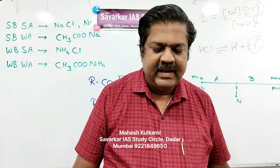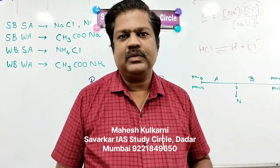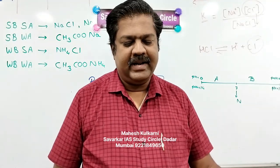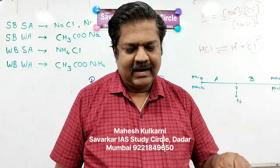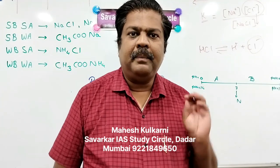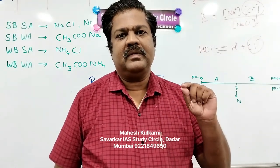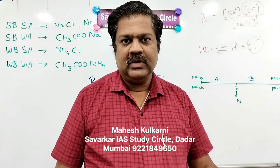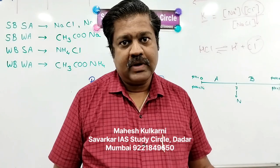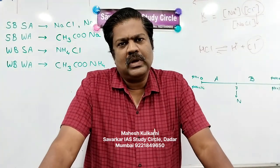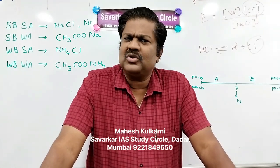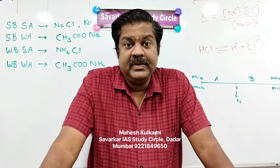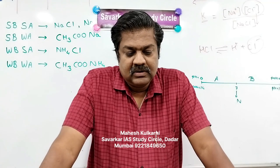First: tetraethyl lead was used as an anti-knocking agent in petrol, not unleaded petrol — because it is tetraethyl lead. Petrol vehicles were emitting lead in the form of PPM, and that is why it is no longer used. When it is not used, the petrol is called unleaded petrol. Around 1999-2000 both types of petrol were available. Now in Maharashtra, unleaded petrol is everywhere. Unleaded petrol means tetraethyl lead is not present. So the first statement is false.